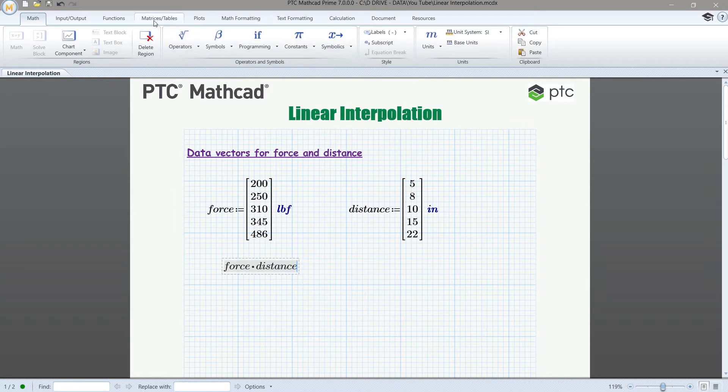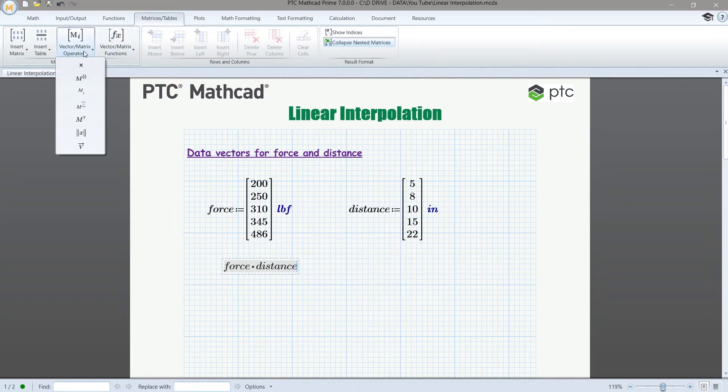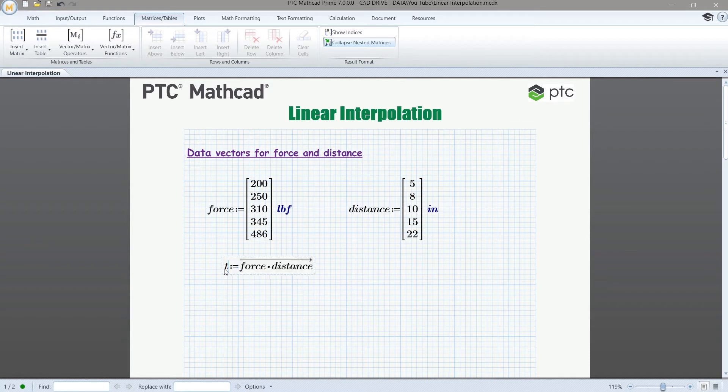So we can just type force times distance, and when we're multiplying two vectors by one another, we actually have to vectorize the operation. So here on the vector matrix operators under the matrices and tables tab, we have the vectorization operator at the bottom. Let's apply that.